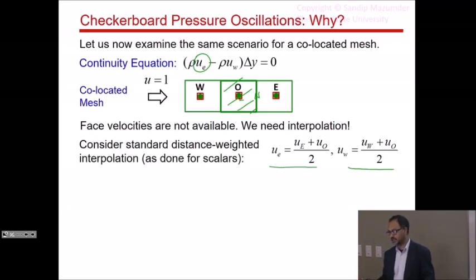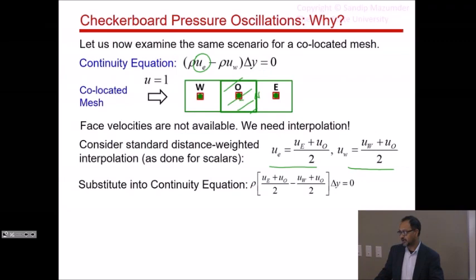This is distance-weighted interpolation, obviously equally spaced mesh, so the weighting functions are half. And now I plug it into my continuity equation. Density, again, is a constant. So instead of u east, I've used this. Instead of u west, I've used that. Plug it in. Simplify, you see the u naughts cancel out, and I get u east is equal to u west. Now, what's the problem with that? The problem with that is this constraint or solution to our continuity equation can be satisfied by infinite many velocity fields.